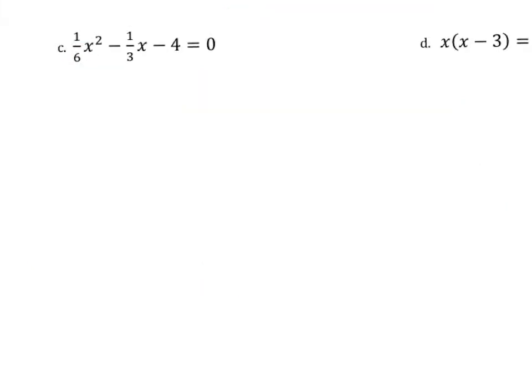Let's look at part C. We want to be able to solve any type of quadratic equation by factoring. Sometimes the coefficients are fractions, and that is perfectly fine. This example is 1/6 x squared minus 1/3 x minus 4 equals 0. Since we haven't looked at factoring with fractions, one way to solve these equations is to get rid of the fractions first — just like when we cleared fractions in linear equations. I'll find the least common denominator. The denominators are 6 and 3, and the least common multiple of 6 and 3 is 6. I'm going to multiply both sides of this equation by 6.